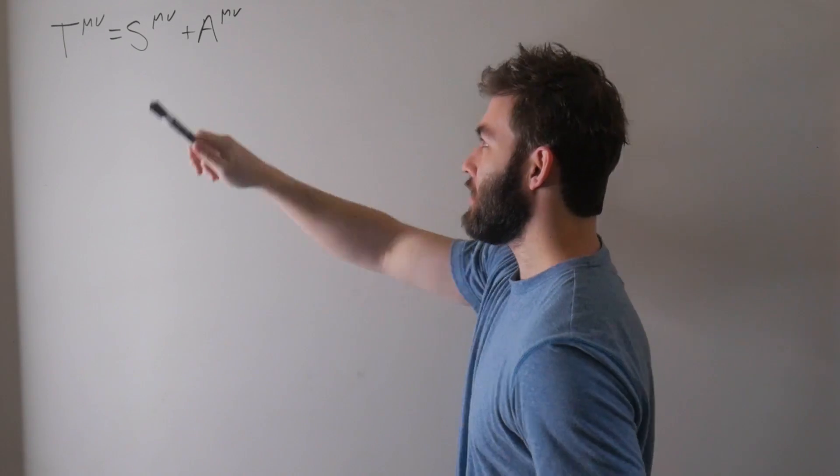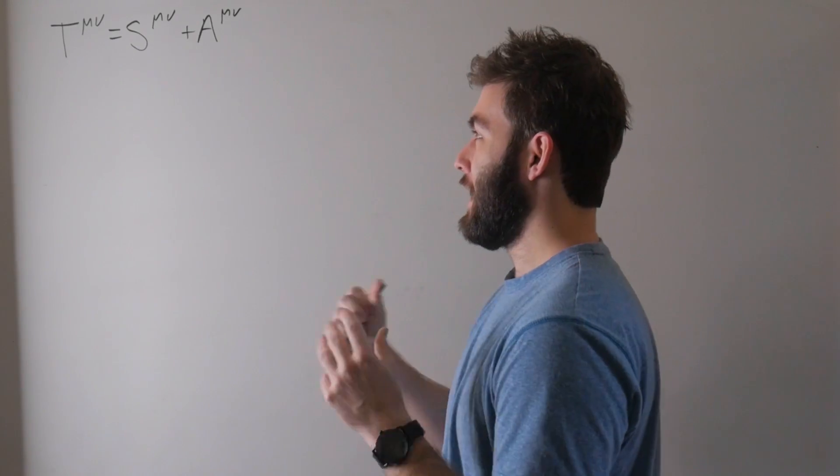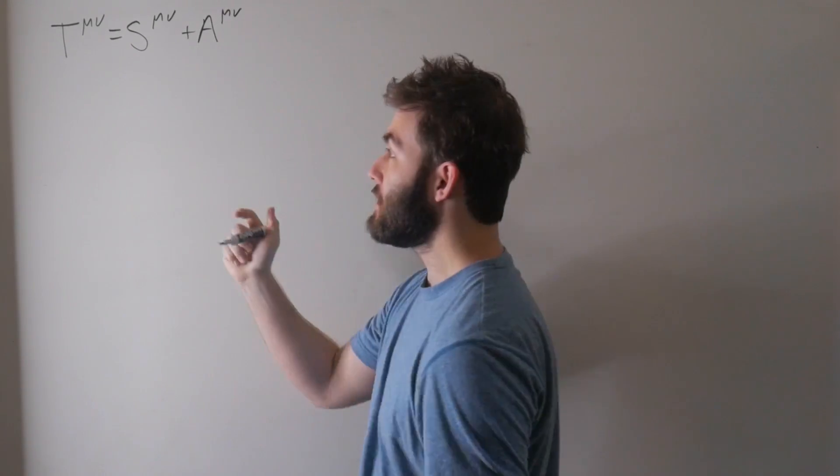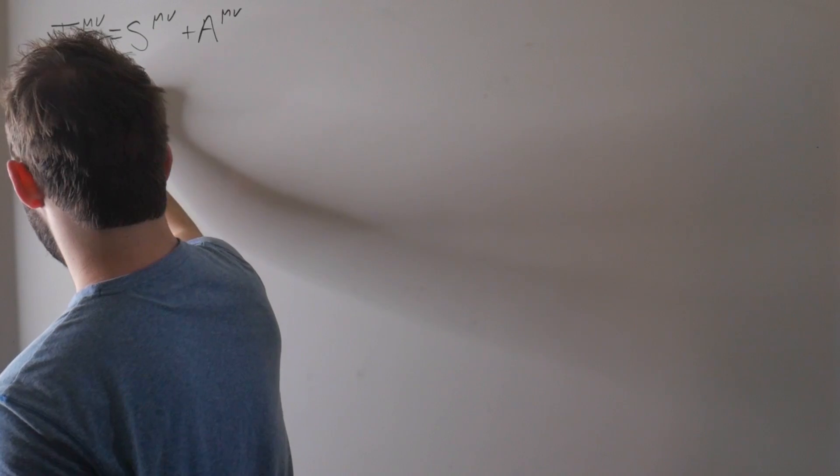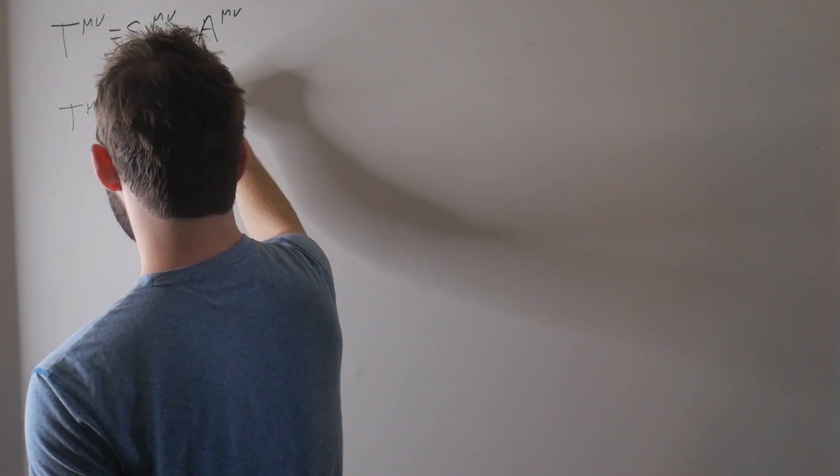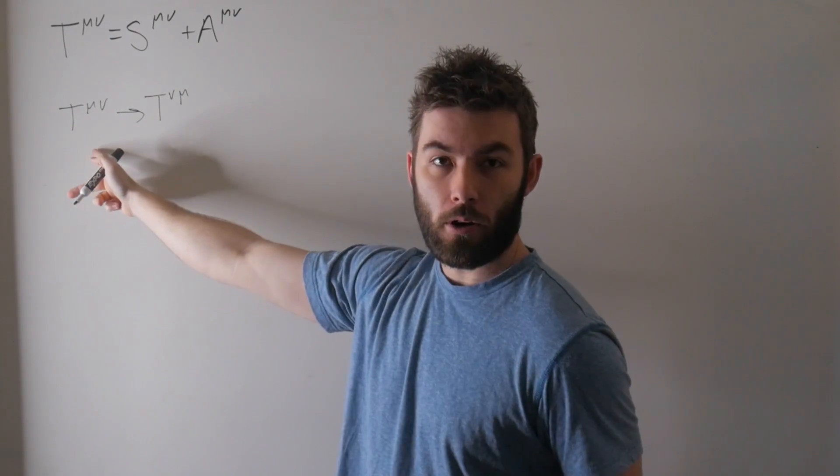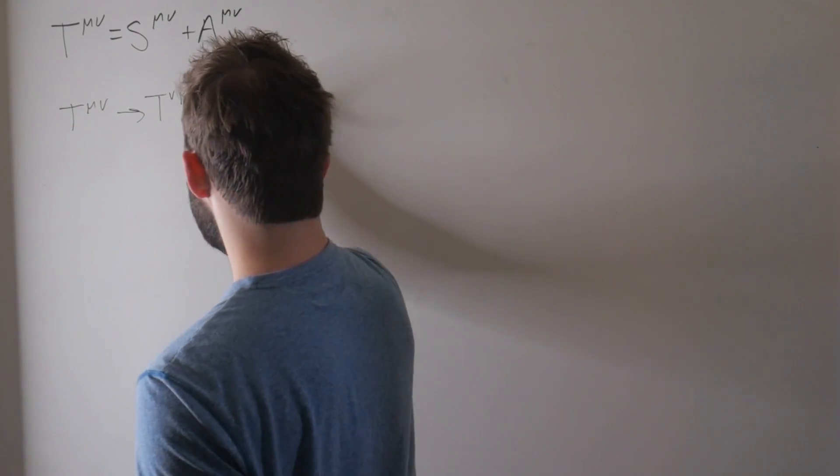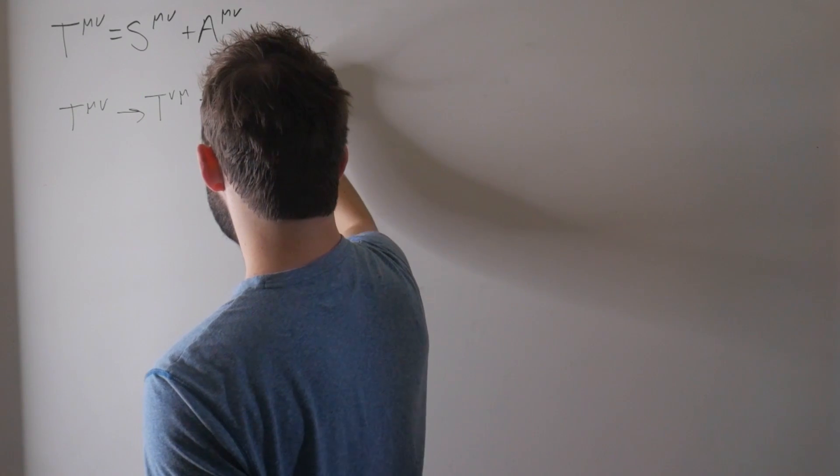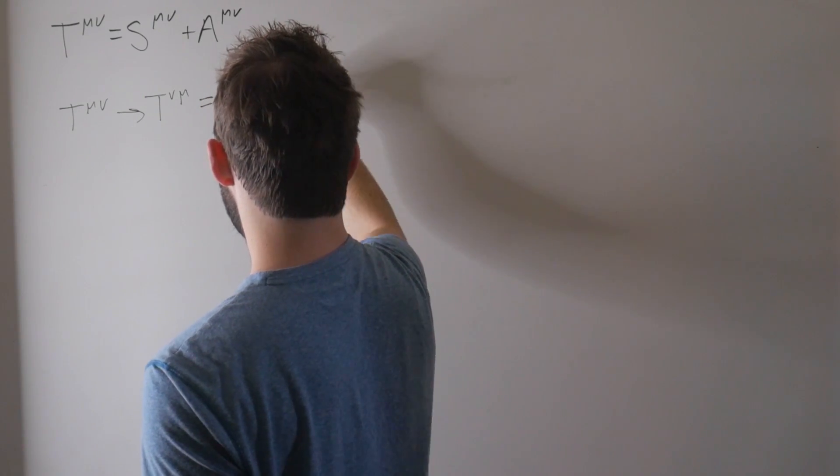Before we go about proving we can write it as a sum of a symmetric and antisymmetric, we've got to define our terms. What does this mean? Well, this all has to do with what happens when we swap indices. If we let this T^μν go to a T^νμ, what does that correspond to? That's just taking the transpose of our original tensor.